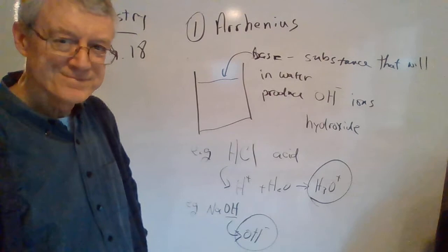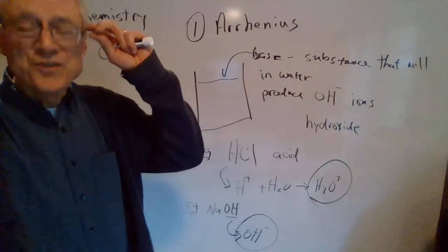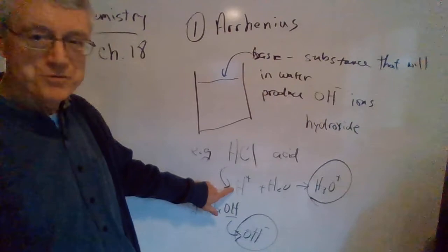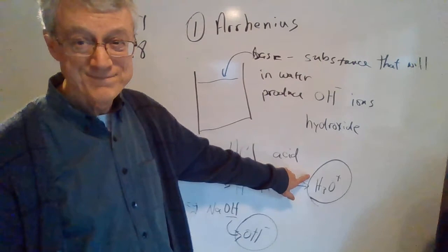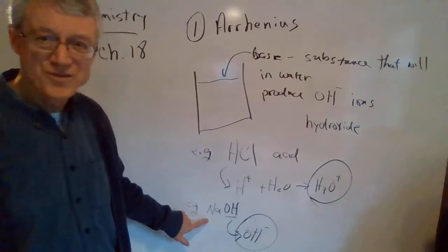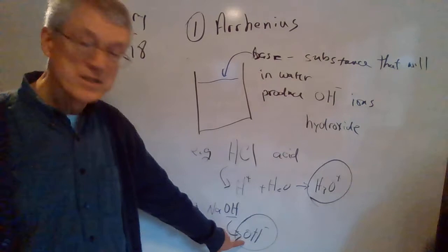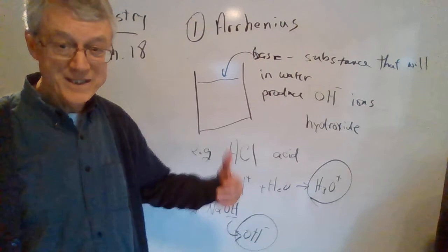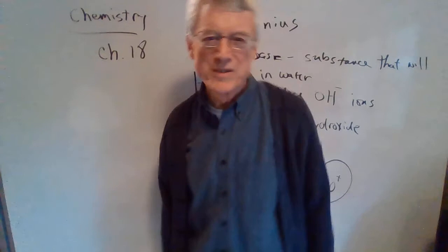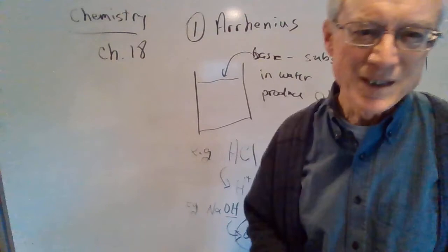First definition. I will want you to know, what did Arrhenius tell us an acid is? Anything that in water produces hydrogen ions, which turn into hydronium positive ions. That's an acid. What did Arrhenius tell us a base is? Anything that when you put it in water, it produces hydroxide ions, negative ions. You've got definitions for acid and base. Make sure that's in your notes. Take a picture of them. Email it to me. That's all you have to do for your first day of school in chemistry.